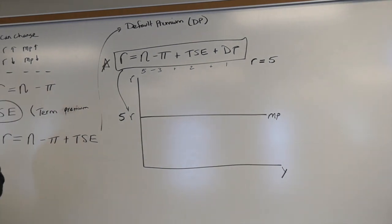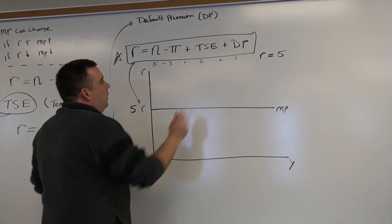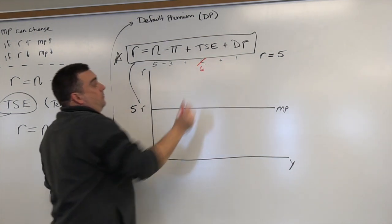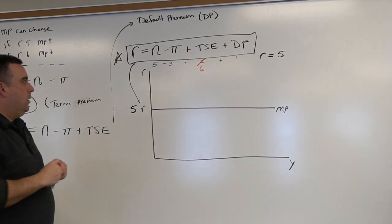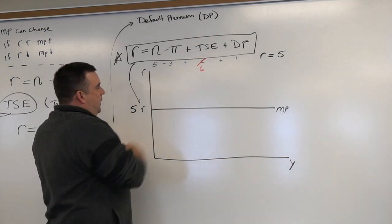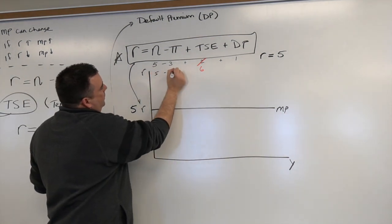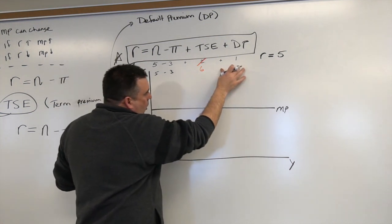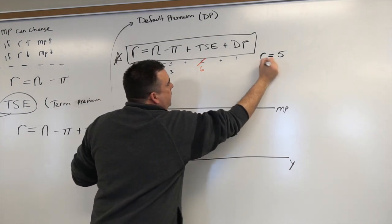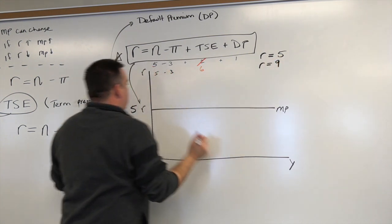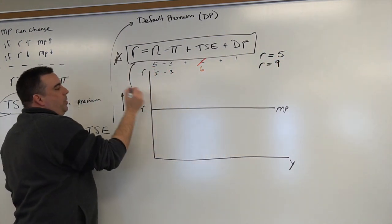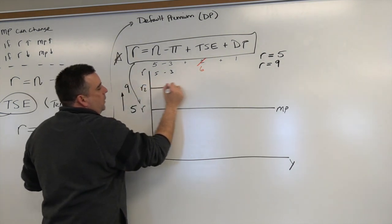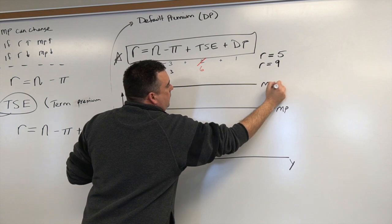What if something changes? What if TSE is not 2 but goes to 6? Well, I could solve it out. Keep everything else the same. I would have 5 minus 3 is 2, 2 plus 6 is 8, plus 1 is 9, and I would get R equal to 9. Well, 9 is higher up on the axis, so R2 would be up here, which brings my MP function up.